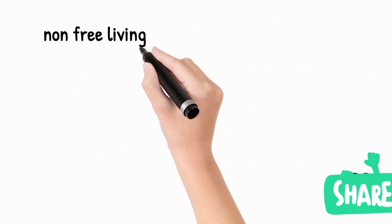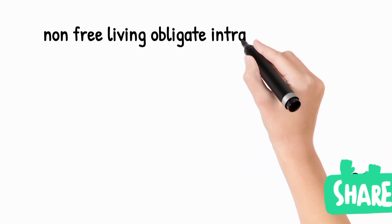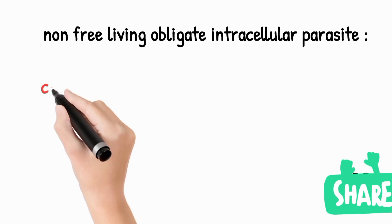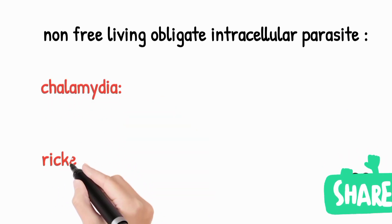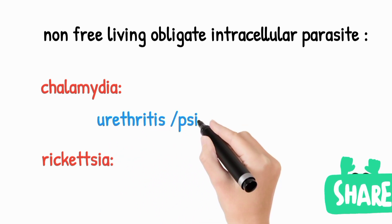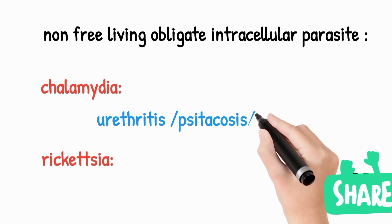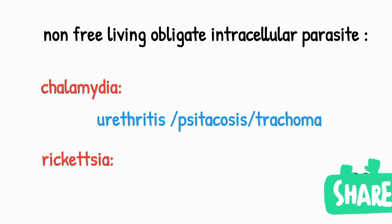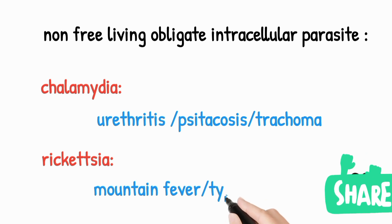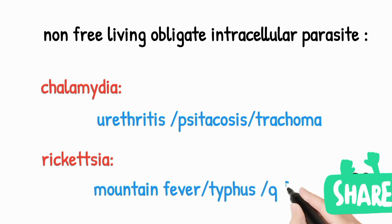Non-free living obligate intracellular parasites are organisms totally dependent on the host for nutrition and growth. Examples are Chlamydia and Rickettsia. Representative diseases of Chlamydia include urethritis, psittacosis, and trachoma — psittacosis affects the lungs and trachoma affects the eyes. Rickettsia causes Rocky Mountain spotted fever, typhus, and Q fever.